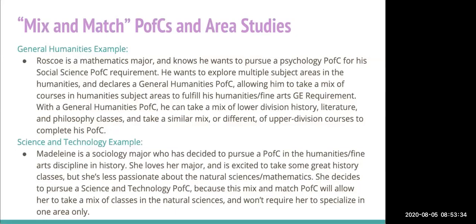Another example: Madeline is a sociology major pursuing a PFC in history for humanities and fine arts. She's less passionate about natural sciences, so she decides to pursue a Science and Technology PFC. This mix and match option allows her to take courses across natural sciences without specializing in one area — for instance, taking some chemistry, biology, and marine science courses — rather than six courses in a single discipline.